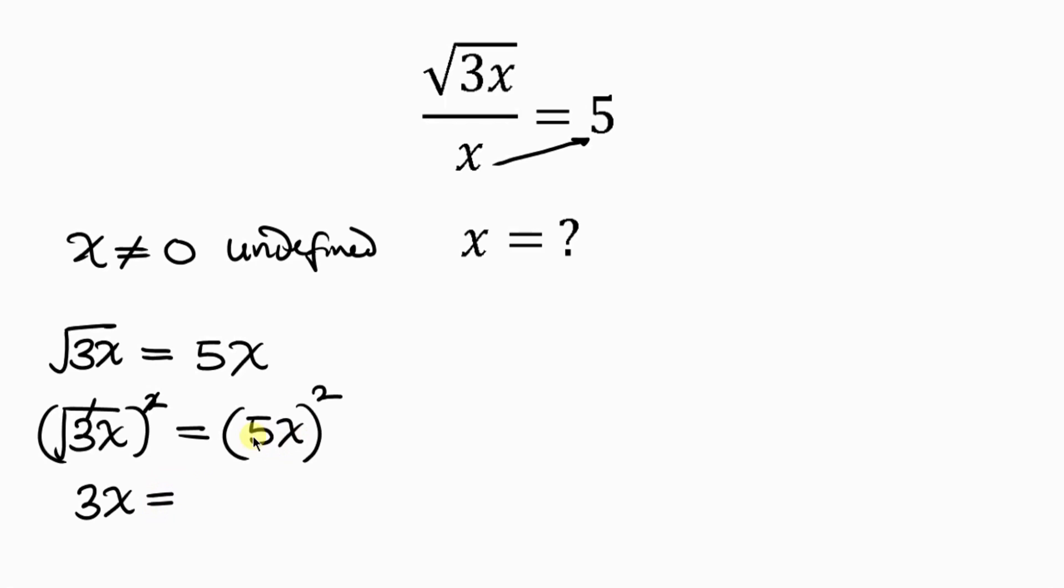Now, expanding this, we have 5 squared, which gives 25, and x squared. So, 25x squared. Our next step will be to move 3x to the right-hand side, so that we have 0 remaining on the left, to be equal to 25x squared. And as 3x crosses to the right, it becomes minus 3x.